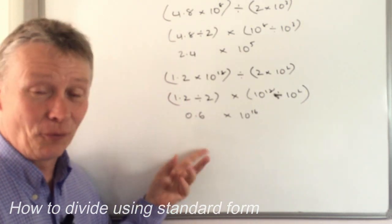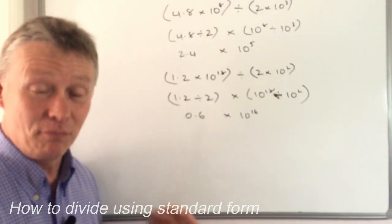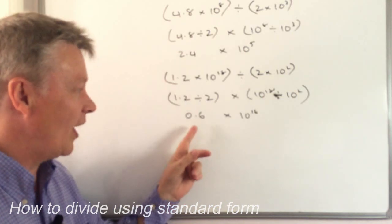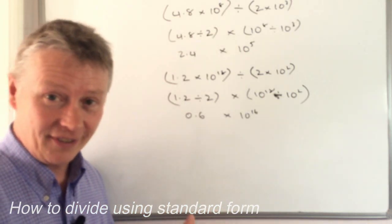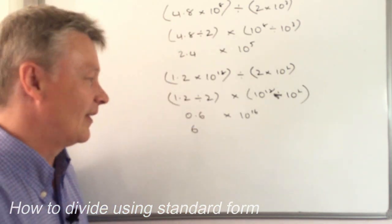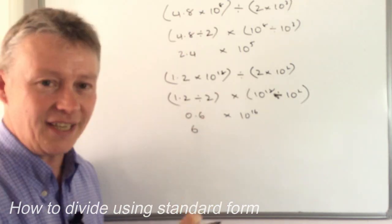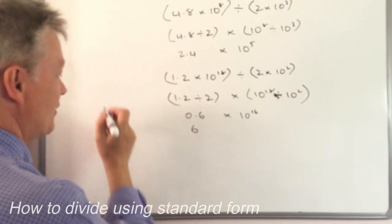That's one mark out of two marks. You need to just make sure you change this and put it into standard form where the first number is between 1 and 10. So I would write that as 6. Now, what I've got here is if you like, I've got 0.6 with 16 zeros after.